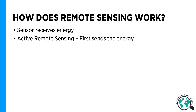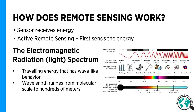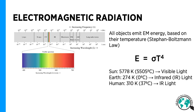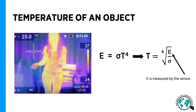So how does remote sensing work? The sensor receives some energy, and in the case of active remote sensing, it sends that energy first. Now all objects emit electromagnetic radiation based on their temperature. This is called the Stefan Boltzmann law, and because we have temperature raised to the fourth power, it's very highly dependent on the temperature. So when we take the Stefan Boltzmann law and rearrange it, we can measure the energy using this sensor, and then figure out what the temperature is. That's one of the very basic uses of remote sensing, just like in this infrared camera of the person there.